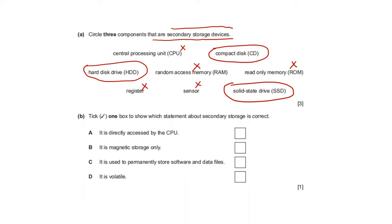Part B: tick one box to show which statement about secondary storage is correct. It is directly accessed by the CPU — no, only primary storage is directly accessed by the CPU. It is magnetic storage only — no, it also includes optical and solid state. It is used to permanently store software and data files — yes, that is true. It is volatile — no, it can still store data when there is no power.